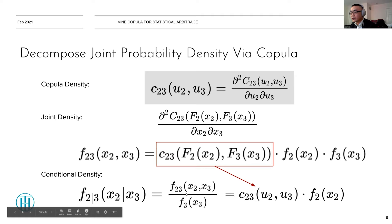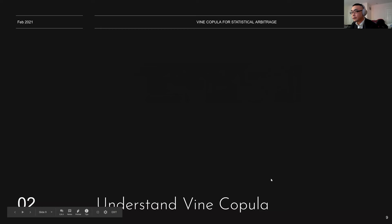How are those two related? f(2|3) equals f23 divided by f3. And f23 equals the copula multiplied by f2 times f3. So canceling f3, you get the copula multiplied by f2.